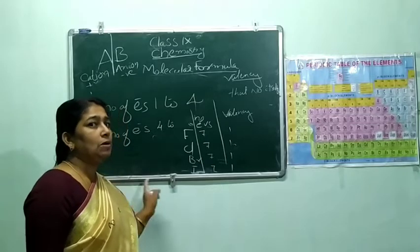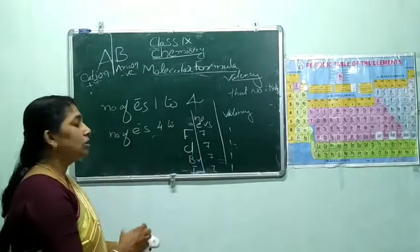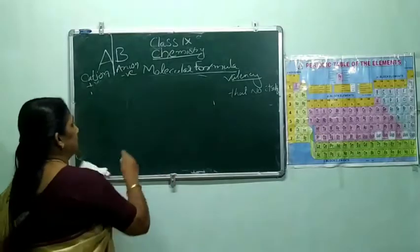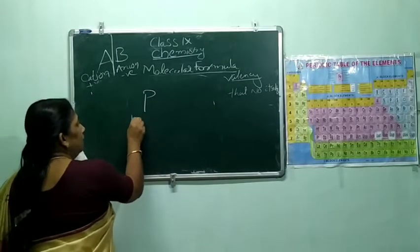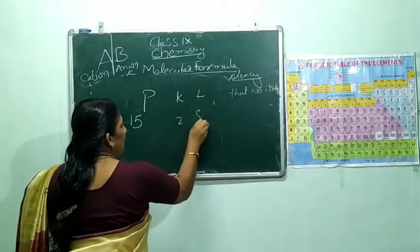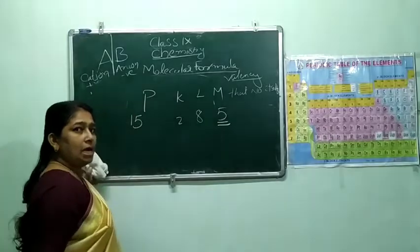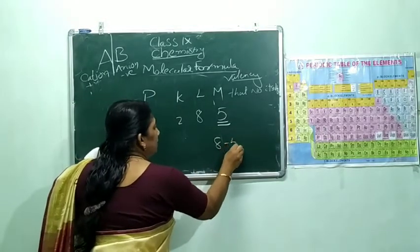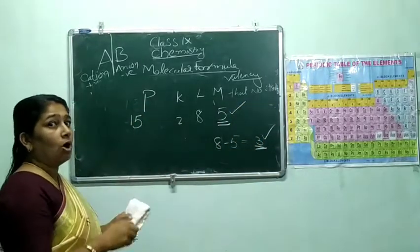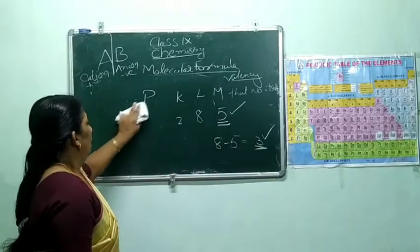In normal cases, valency varies from one to four and back to one. But there are certain other cases. For example, phosphorus has two valencies: three and five. Phosphorus — atomic number 15, electronic configuration K2, L8, M5. Number of electrons in the valence shell is five. So 8 − 5 = 3. That is why phosphorus has two valencies: five and three.